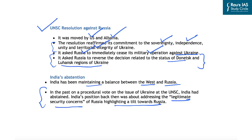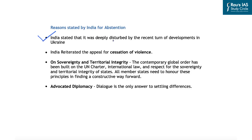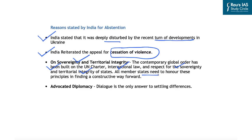What were India's stated reasons for abstaining? India stated it was deeply disturbed by the recent turn of events in Ukraine and reiterated an appeal for cessation of violence. On sovereignty and territorial integrity, India said the contemporary global order has been built on the UN Charter, international law, and respect for sovereignty and territorial integrity of states, and that all member states need to honor these principles in finding a constructive way forward. India advocated diplomacy — that dialogue is the only answer to settling differences, not violence. In principle, India advocated respecting sovereignty and territorial integrity, cessation of violence, and the path of diplomacy, but abstained from voting.